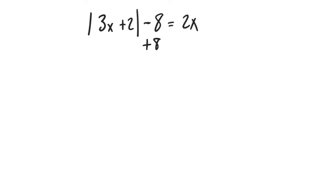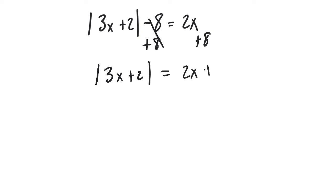Don't get ahead of yourself thinking about that other X — it's not a big deal, just something to think about. So I'm getting rid of this 8 by adding 8 on the left side, and on the right side they don't combine, so I write 2x plus 8 because those are not like terms — you have an X variable and an 8, you can't put those together. Now our left side has just the absolute value of 3x plus 2.